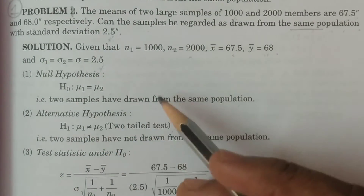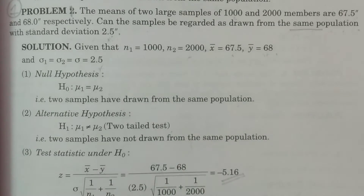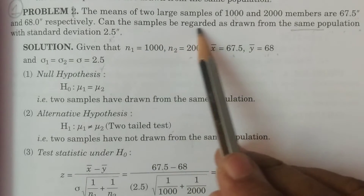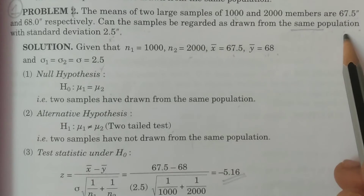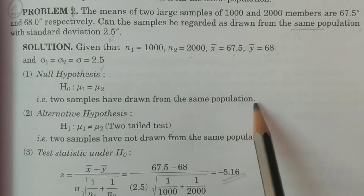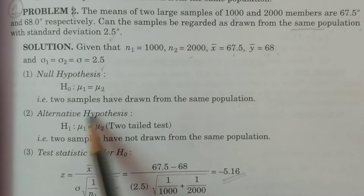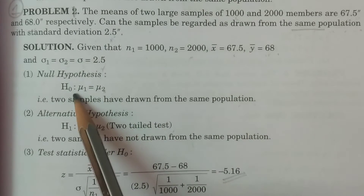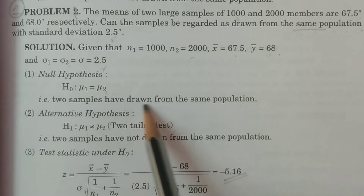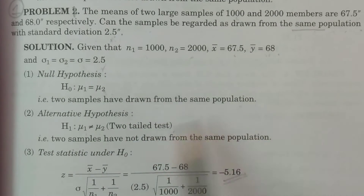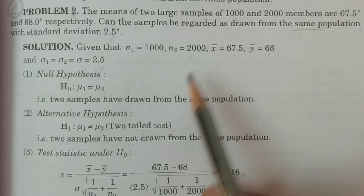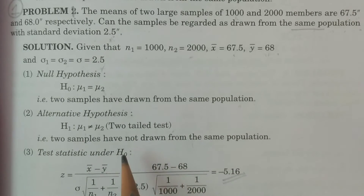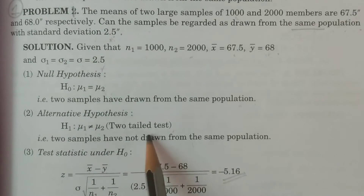Now the null hypothesis and the alternative hypothesis. The null hypothesis H0: the samples are drawn from the same population, meaning mu1 is equal to mu2. The alternative hypothesis H1: the samples are not drawn from the same population, so mu1 is not equal to mu2 — this is a two-tail test.